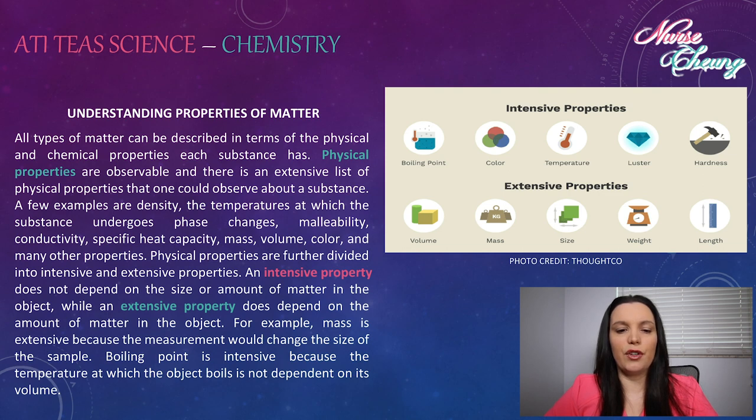Physical properties are further divided into intensive and extensive properties. An intensive property does not depend on the size or amount of matter in the object, while an extensive property does depend on the amount of matter in the object. For example, mass is an extensive property because the measurement could change with the size of the sample. Boiling point is an intensive property because the temperature at which the object boils is not dependent on its volume.